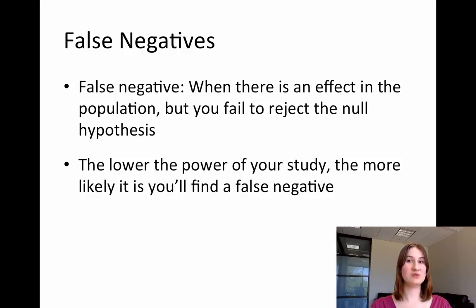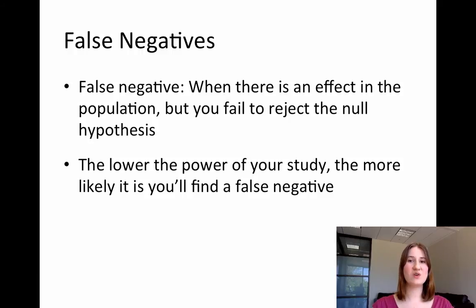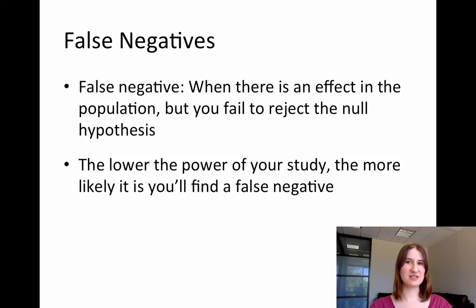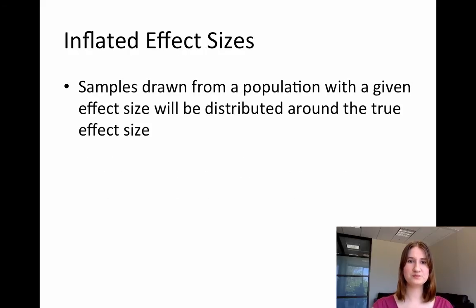If I go down to 30% power, 70% of my studies are going to show false negatives, which is a problem because I may think the effect isn't there, abandon the line of research unnecessarily, when perhaps there really was an effect I could have followed up on.